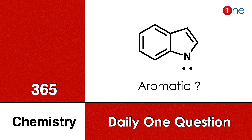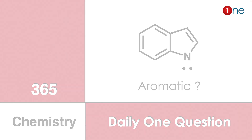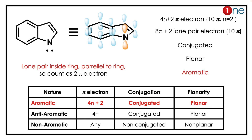Welcome to One Chemistry. This is the 365 Chemistry Series — one question daily for you. A fused bicyclic system is given; basically it's an indole. You have to find whether the indole is aromatic or not. Everybody knows indole is aromatic, but you should know the justification for it.